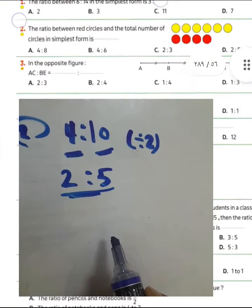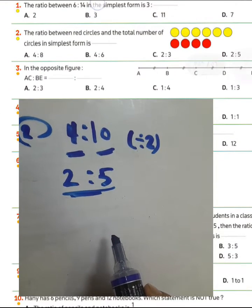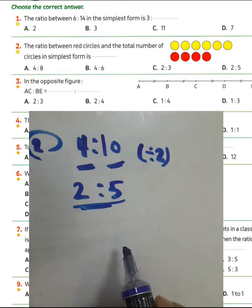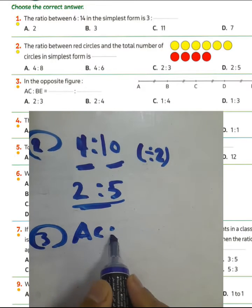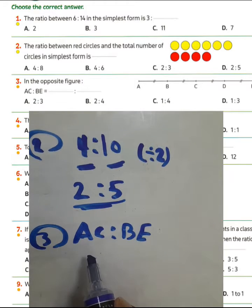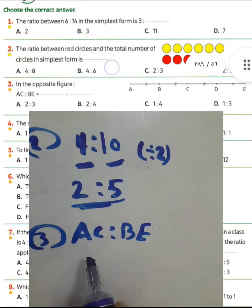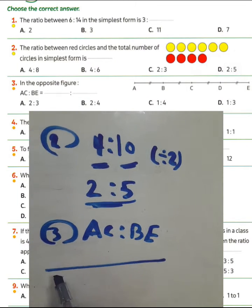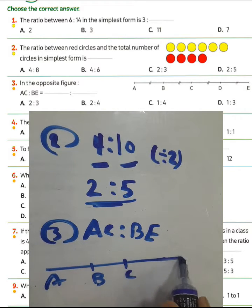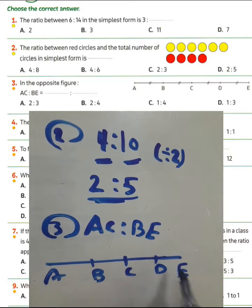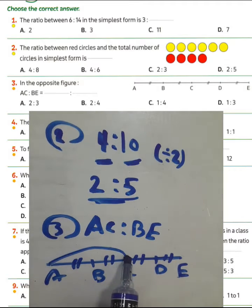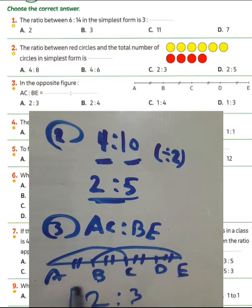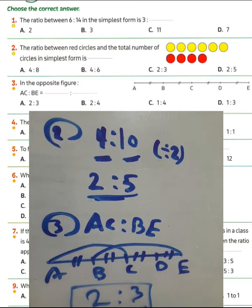Question number 3, the opposite figure. We want to find the ratio between line segment EC to PE. EC here — from A to C we have two parts equal. Look here: we have A, B, C, D, and the last one E — four equal parts. The ratio between EC: we have two parts, and from P to E: 1, 2, 3. Then the ratio between them will be 2 to 3. Choose letter A.